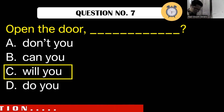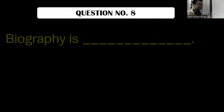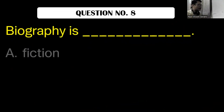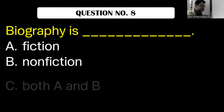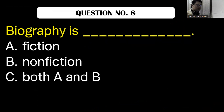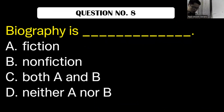Question number eight. Biography is: A, fiction. B, non-fiction. C, both A and B. D, neither A nor B. What is the correct answer?